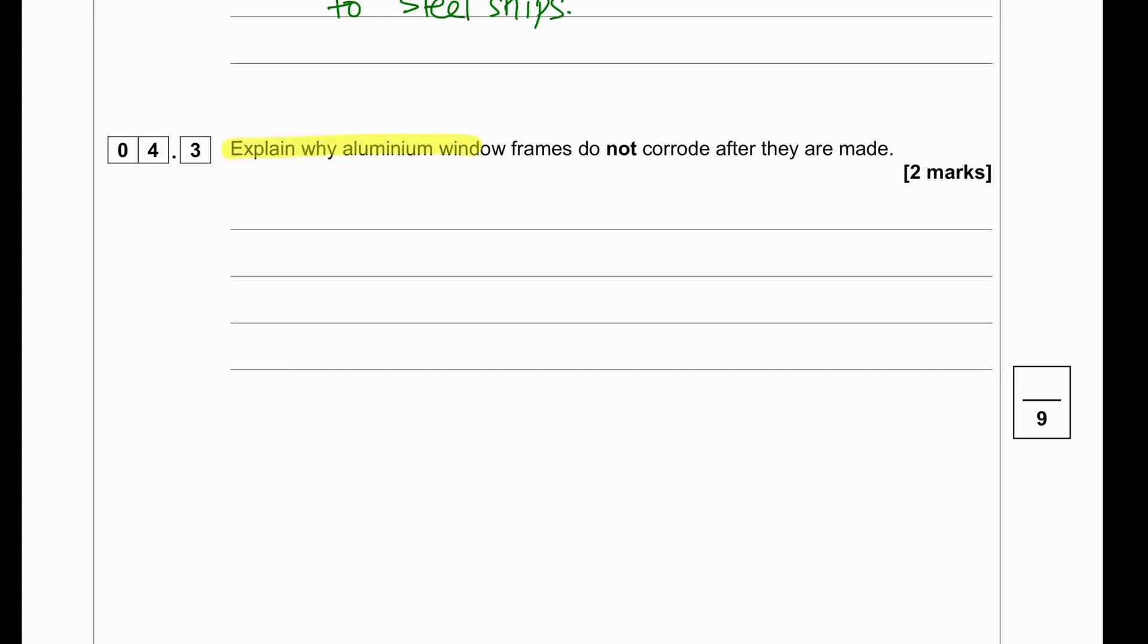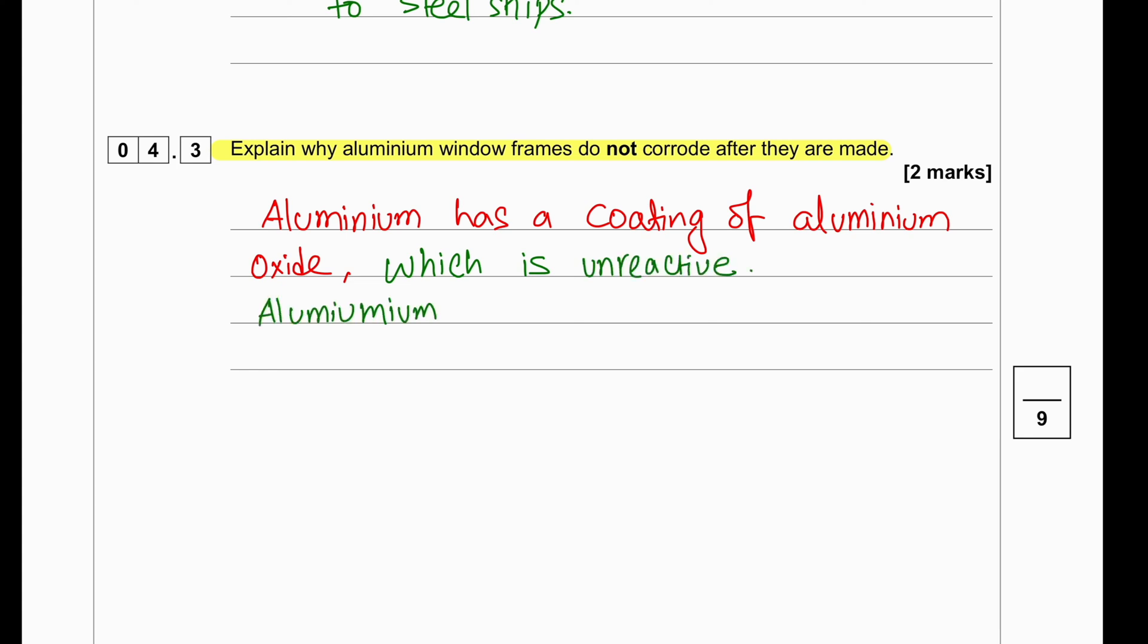Explain why aluminium window frames do not corrode after they are made. Aluminium, once they are manufactured, when they are hot, they react with oxygen in the air and form aluminium oxide coating. So, the aluminium oxide coating that remains on top of the particular aluminium acts as a protective barrier and protects the metal from further corrosion from air, water, oxygen from reaching the particular metal. So, it remains as it is and it does not corrode.